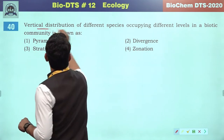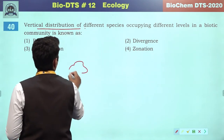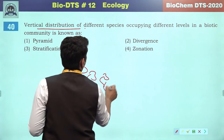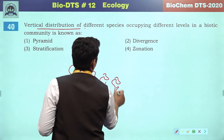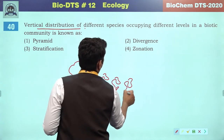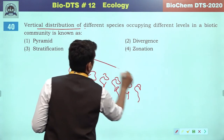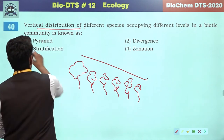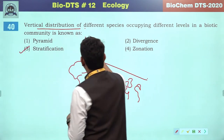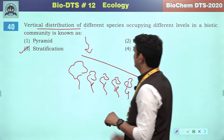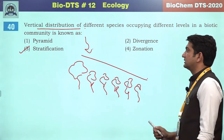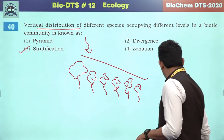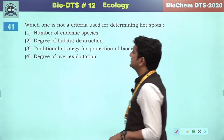Vertical distribution of different species occupying different levels — this vertical distribution can be clearly seen in forest areas and forest zones. It is called stratification and is due to the impact of solar radiation or light. So the third will be the correct answer.